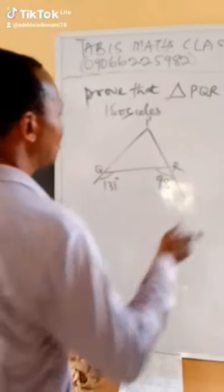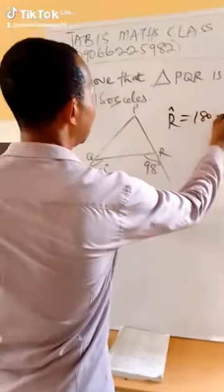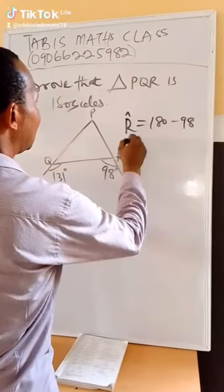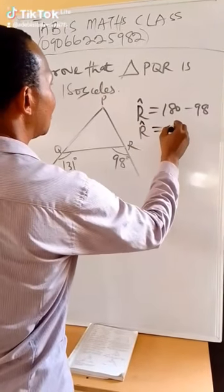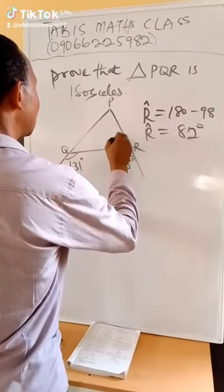So let's calculate angle R. R equals 180 minus 98, so R now equals 82 degrees. So this angle is going to be 82.